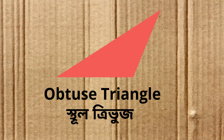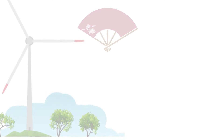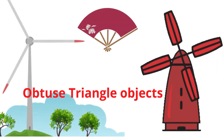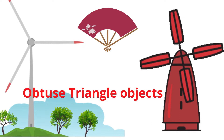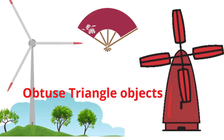Obtuse Triangle. The object is made of an obtuse triangle such as a hand fan, windmill machine.